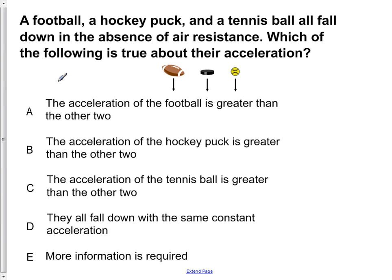A football, a hockey puck, and a tennis ball all fall down in the absence of air resistance. Which of the following is true about their acceleration? A. The acceleration of the football is greater than the other two. B. The acceleration of the hockey puck is greater than the other two. C. The acceleration of the tennis ball is greater than the other two. D. They all fall down with the same, constant acceleration. Or E. More information is required.